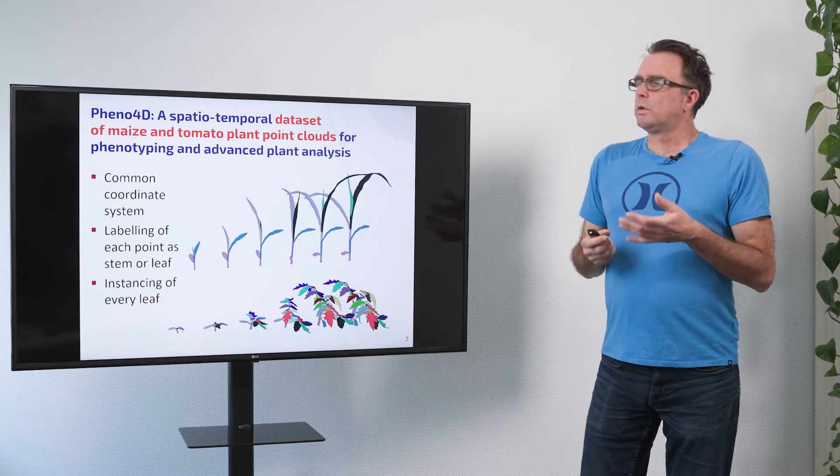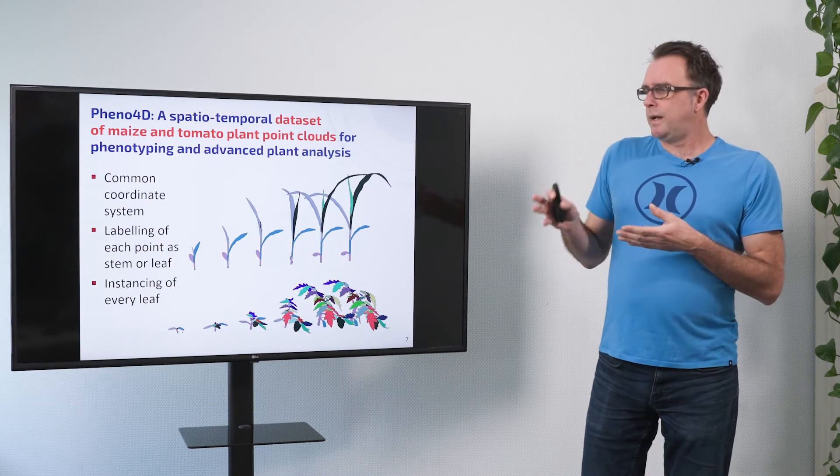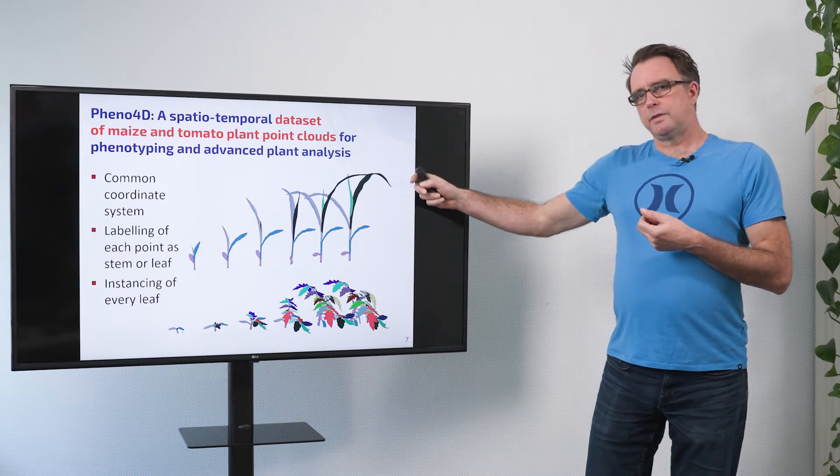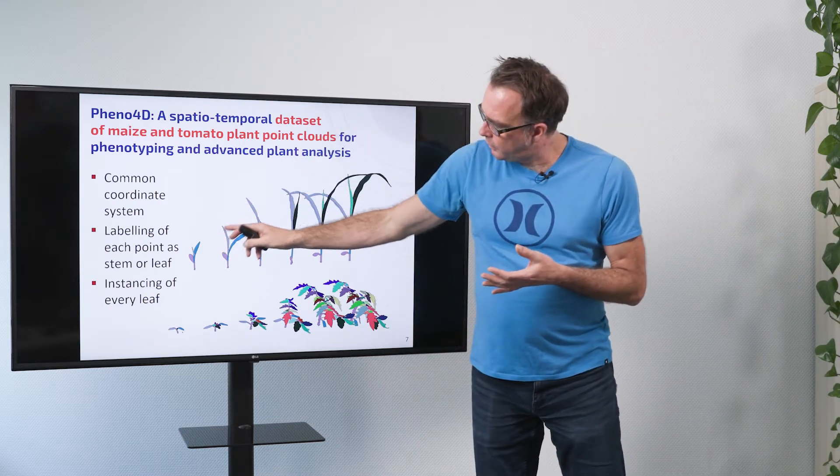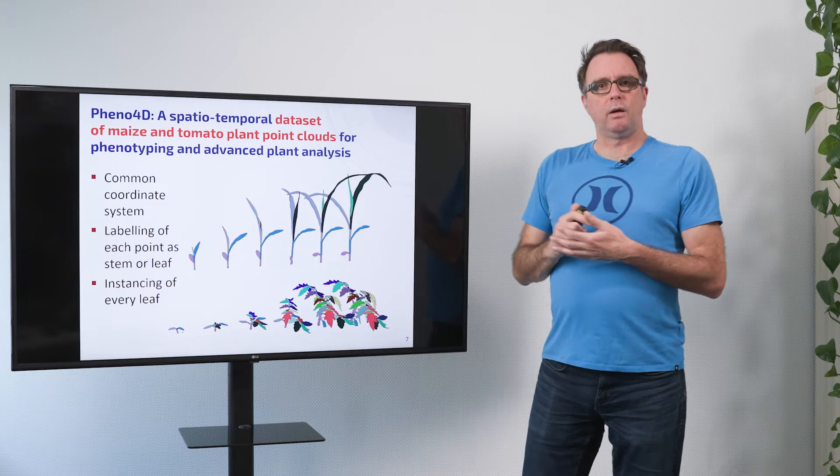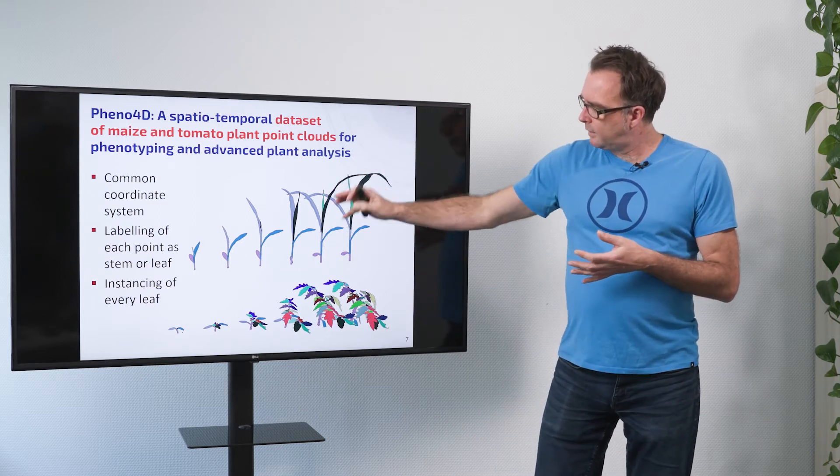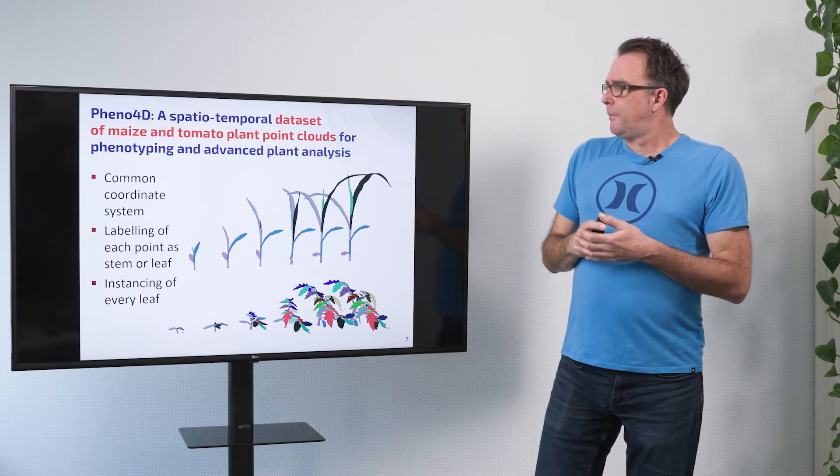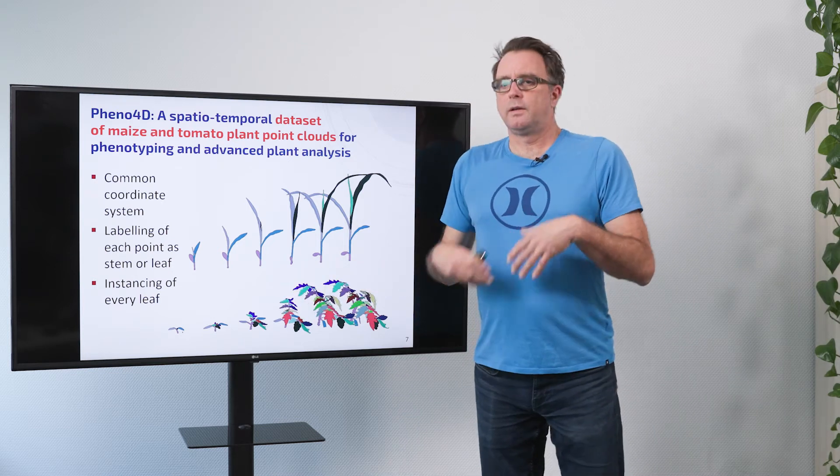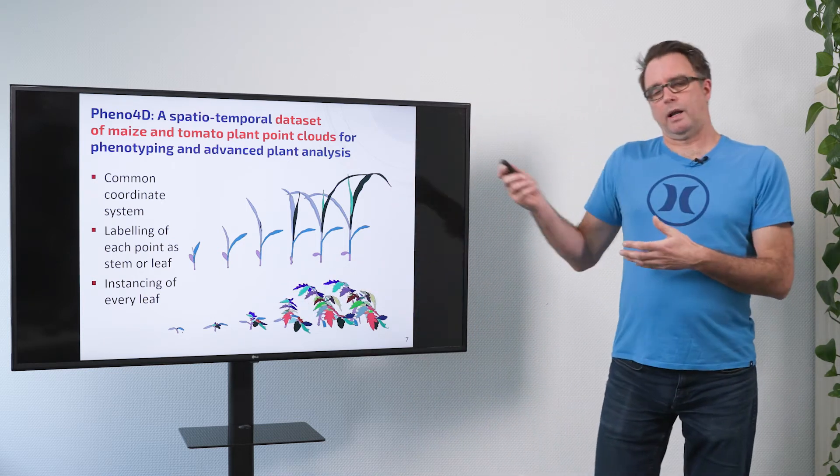Then we also labeled the data. We segmented them into stems and leaves so that we can follow each of the leaves how it grows and how it develops. We did that for the maize and for the tomato and so we can instance every leaf and see how it develops.